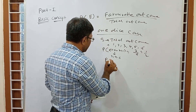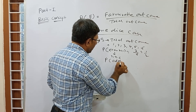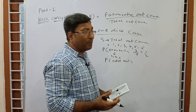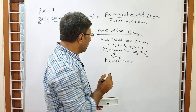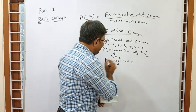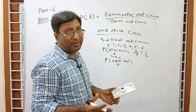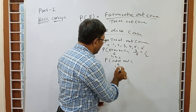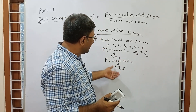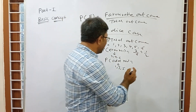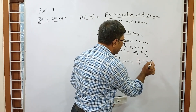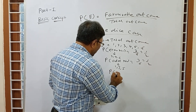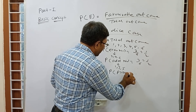Probability of an odd number — if we throw 1 die, what is the probability of getting an odd number? Odd numbers are those not divisible by 2: 1, 3, 5. So 3 outcomes are odd. The answer is 3/6 = 1/2.